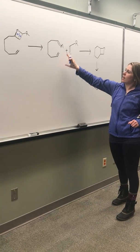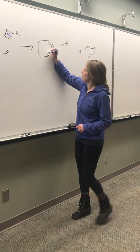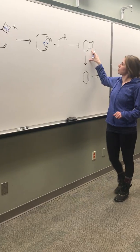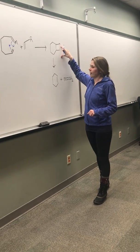Then the next step is for another 2 plus 2 cycloaddition, where these bonds swing there. We end up forming another four-membered ring with the metal again inside the ring.